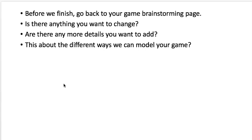That's about it for today. Before you finish, go back to your game brainstorming page in your workbook and make sure you have all your characters identified — see if there's anything you want to change or add. Then start thinking about different ways to model your game: what the coordinate system will look like, how your game is a model of the world. We'll work on that in our next class.